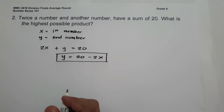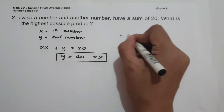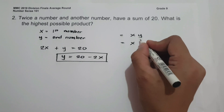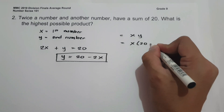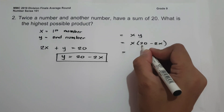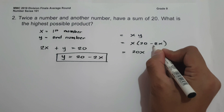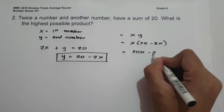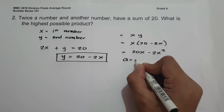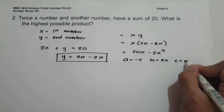To find the highest product, let us have x times y. The value of y is 20 minus 2x. So x times (20 minus 2x) gives us 20x minus 2x squared. So the value of a is negative 2, the value of b is 20, and the value of c is 0.